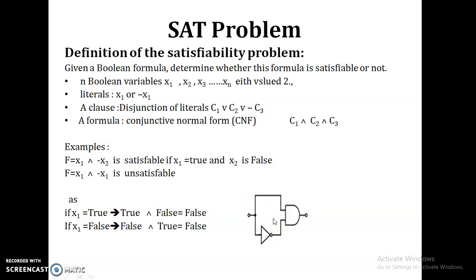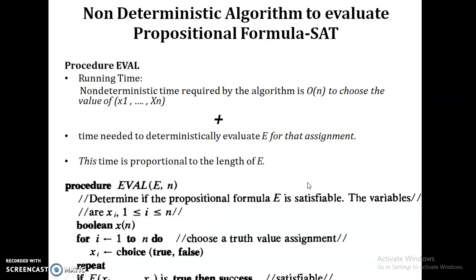For each expression, we have to check the total number of variables and check all 2^n combinations of the variables — only then can we say it is satisfiable or not. In the case of a deterministic algorithm, we try to find all combinations of n variables, which requires 2^n combinations, so it is not polynomial. It comes under NP problems.